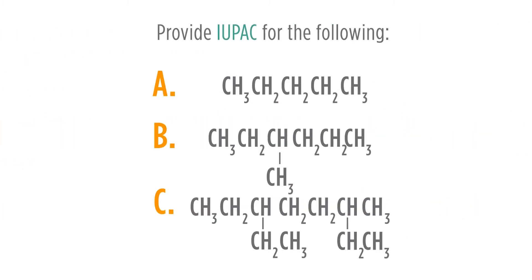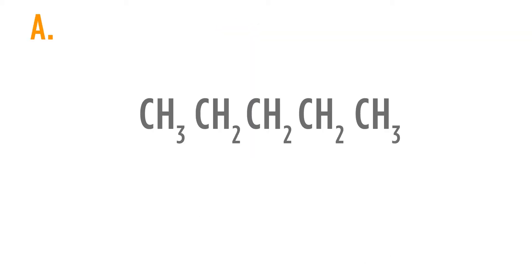Let's look at a straightforward problem. Provide the IUPAC name for the following. Starting with A, we can dissect this one by just counting out the number of carbons: one, two, three, four, five. If we counted in the other direction, we'd still get five carbons. It's always important to count the carbons in any possible direction to make sure that you've found the longest chain. Therefore, the root for this would be pent. It is an alkane, so this would be pentane.